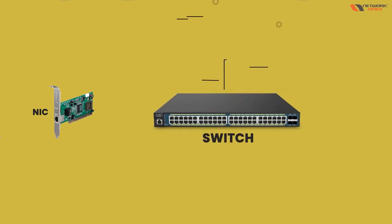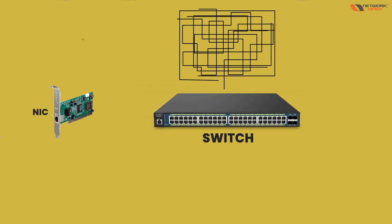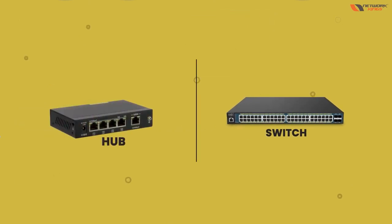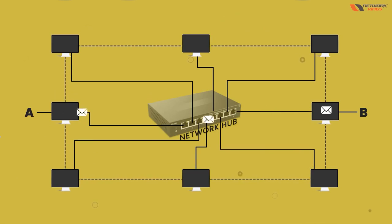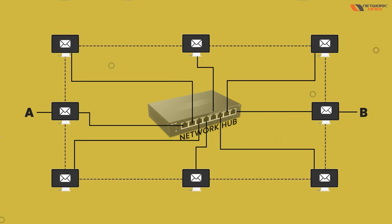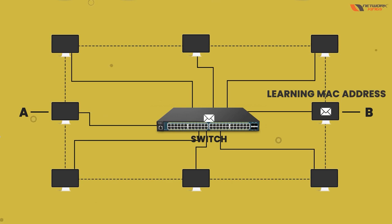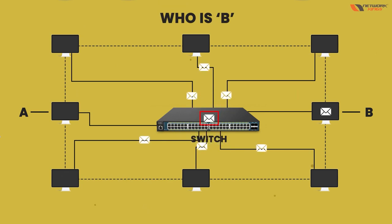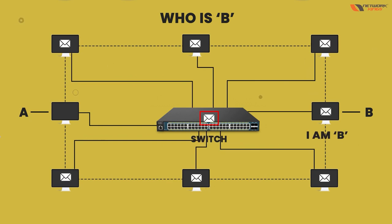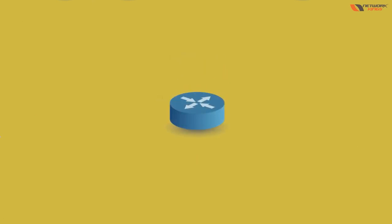Then we use a switch, which is a more powerful device where we connect all components and there is no broadcast problem. If we replace the hub with a switch, the switch only forwards data from computer A to computer B, because the switch learns the MAC address. The switch knows which packet is going to which computer, so other computers will reject the packet.